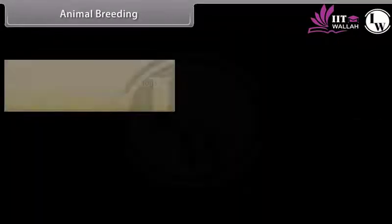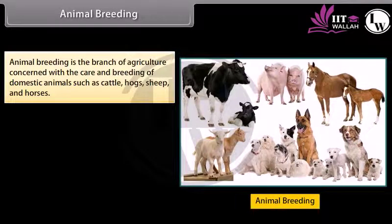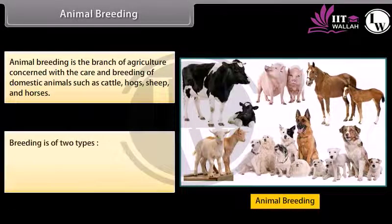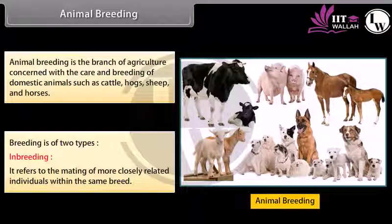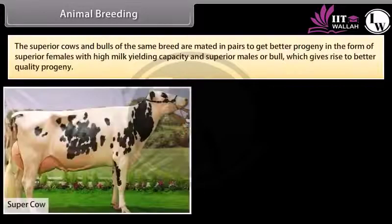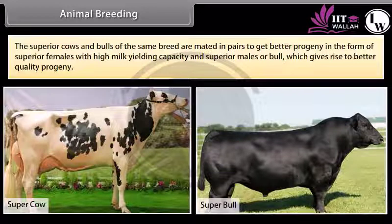Animal breeding is the branch of agriculture concerned with the care and breeding of domestic animals such as cattle, hogs, sheep and horses. Breeding is of two types. Inbreeding refers to the mating of more closely related individuals within the same breed. Superior cows and bulls of the same breed are mated in pairs to get better progeny in the form of superior females with high milk yielding capacity and superior males which give rise to better quality progeny.